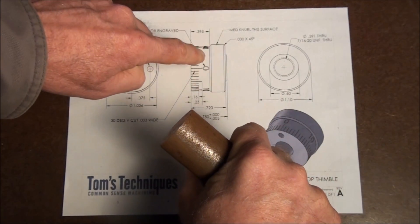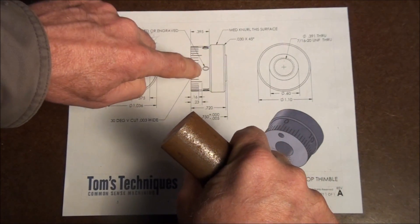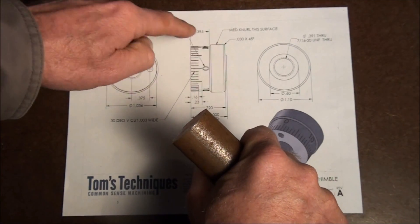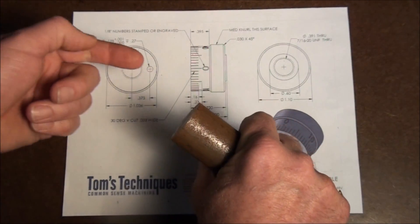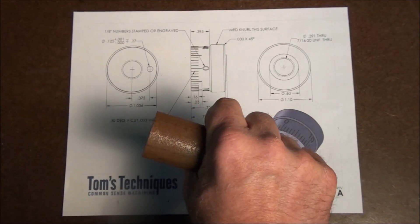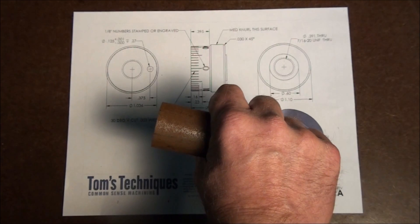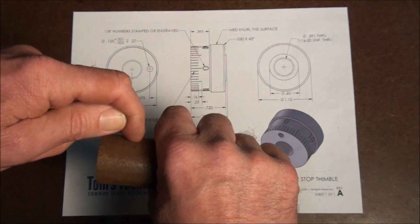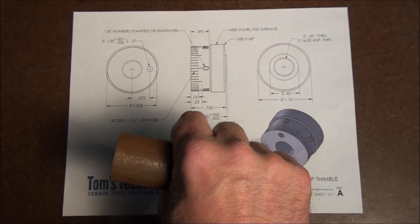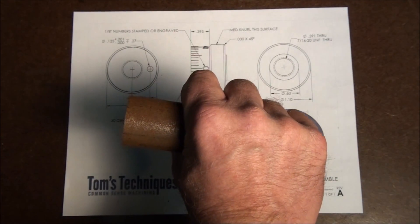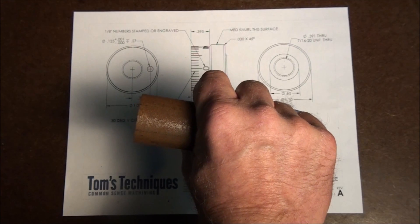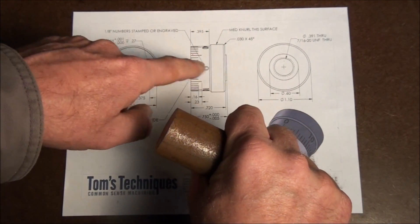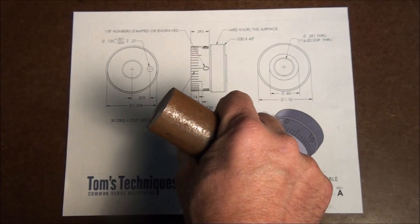I think to start with, what I'm going to do is I'm going to chuck up on one end of the bar. And I'm going to turn the diameter of the thimble here for the divisions and the number stamps. I'm going to turn the diameter for the knurl. And I'm going to face off the left hand end of the part. Once I get that done, I'll put the knurl on while it's still chucked up. And I'll part the part off with the parting tool. So that'll take care of the knurl and the diameters and the facing on one end.